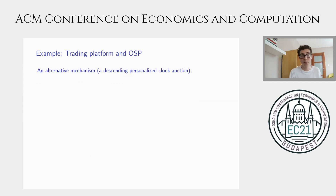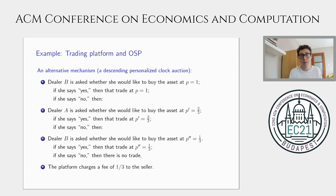Now I want to talk about a different mechanism, which you can view as a descending personalized clock auction. We gradually drop the price. We first go to dealer B and ask if she would like to buy the asset at a price of one. If she rejects, we drop the price to two-thirds and go to dealer A. If dealer A rejects, we drop the price further to one-third and ask dealer B again. Only if dealer B says no is there no trade. The fee is one-third, this time charged to the seller.